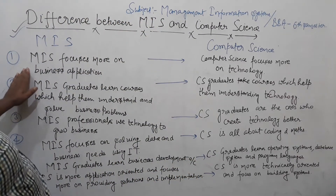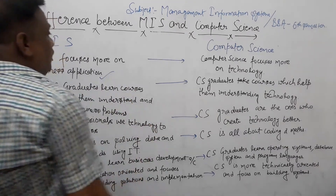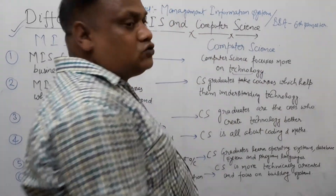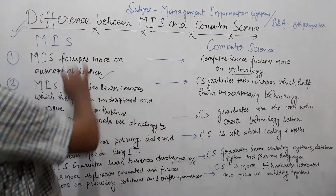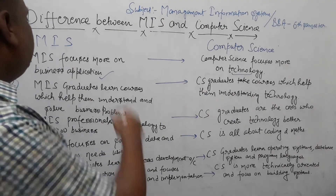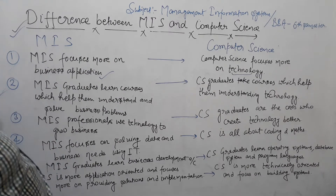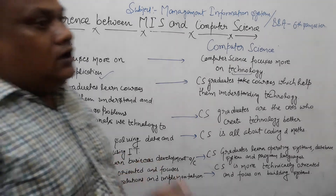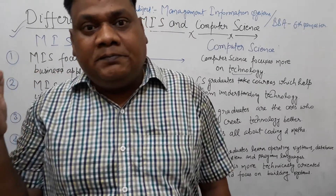MIS focuses more on business applications. Computer Science focuses more on technology and software systems. Computer Science works on implementing software systems, while MIS applies them to manage and support business systems. MIS graduates learn courses which help them understand and solve business problems, whether they go into computer science or the business field.